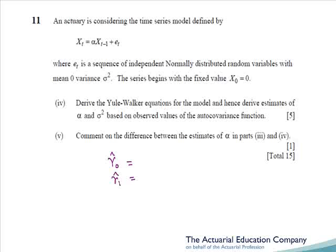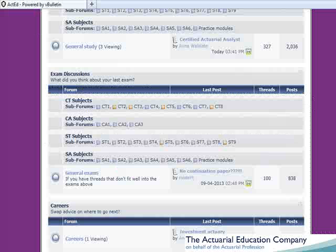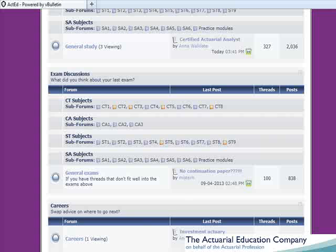The final one mark is to comment on the difference in the estimates, but most students' brains would have fried by this point. Good job it's only one mark. If you'd like to chat with your fellow students about this paper, feel free to post on our forums at www.acted.co.uk/forums.